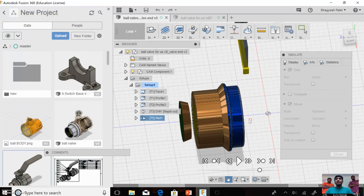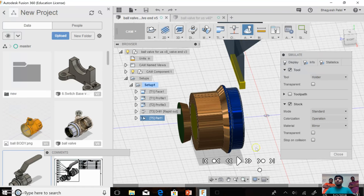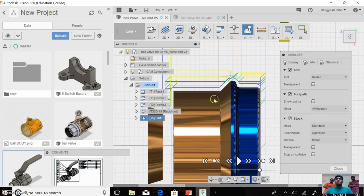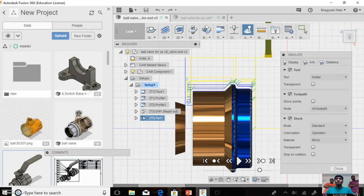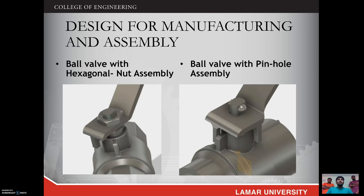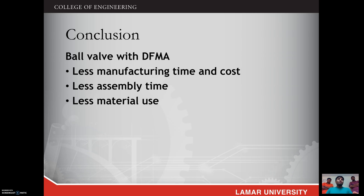You can see the part is automatically manufactured by the lathe machine, so we don't need casting, saving a lot of cost. You can also see the tool path for manufacturing this part. Additionally, we removed the hexagonal nuts and joined the lever using a pin instead. The hexagonal nut is harder and more costly to manufacture, whereas the pin is easy to manufacture and has a shorter assembly time.